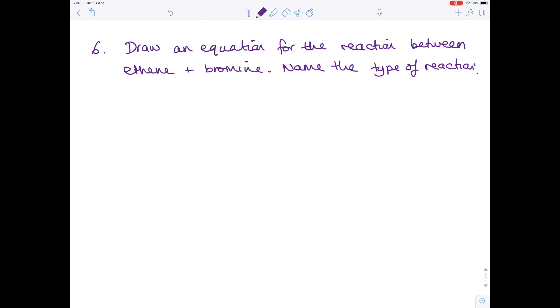Question six: draw an equation for the reaction between ethene and bromine. Name the type of reaction. Ethene is an alkene, so it has a double bond. Bromine is diatomic, which means it exists as Br2. What happens in this case is the double bond breaks and the bromine adds itself to each of the carbons. So this is the compound formed.